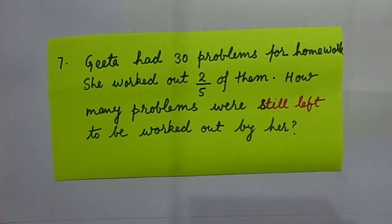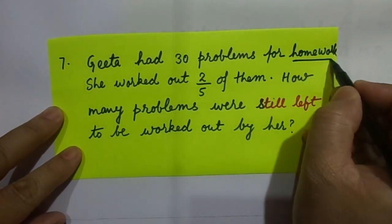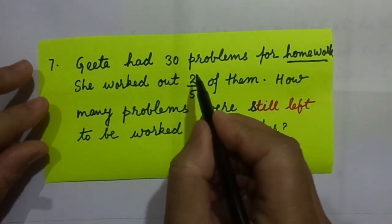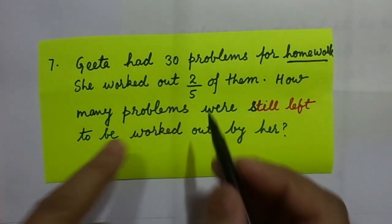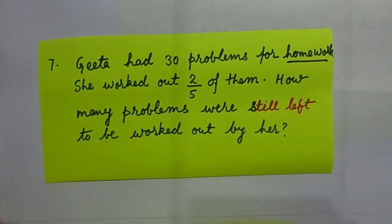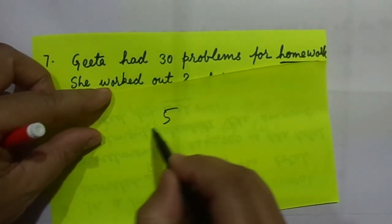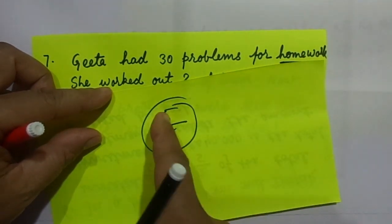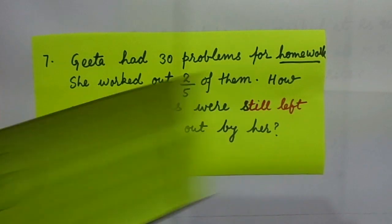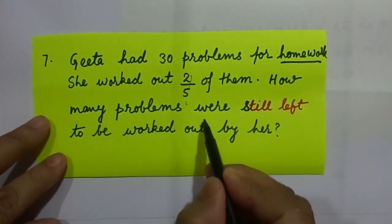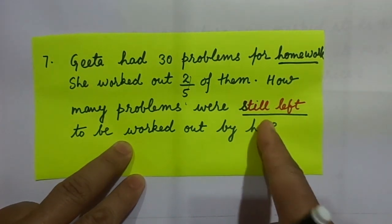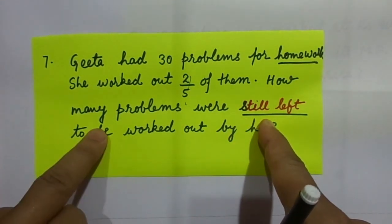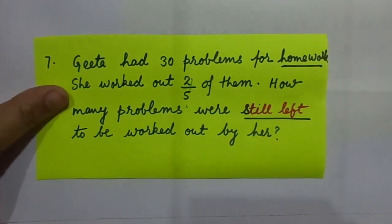Now, Geeta had thirty problems for home assignment — homework. She worked two by five of them. She should have worked five out of five. She worked two by five of them. How many problems were still left? Have a look at these red letters. How many problems were still left? Let me find out how much she has worked.